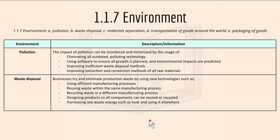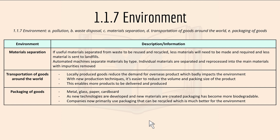For material separation: if useful materials are separated from waste to be reused and recycled, less new material will be required and less material is sent to landfills. Automated machines separate materials by type, and individual materials are separated and reprocessed into raw materials with impurities removed.